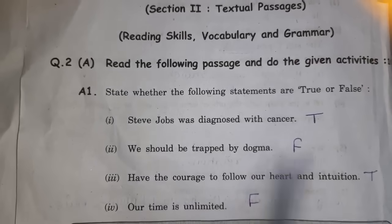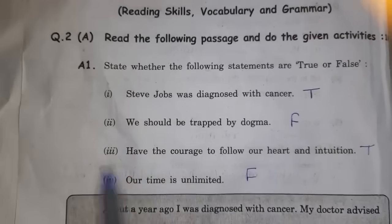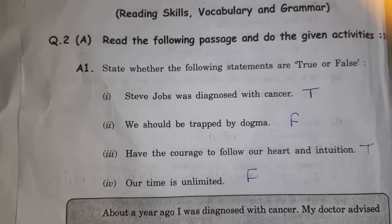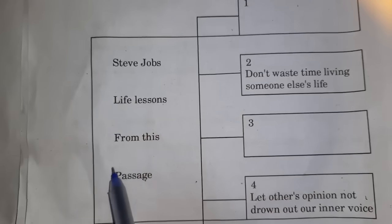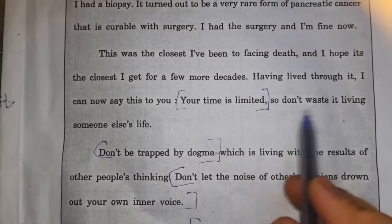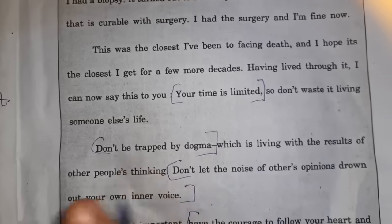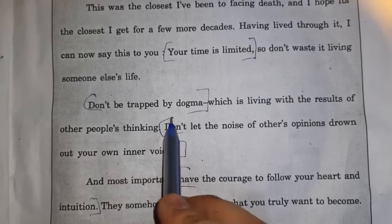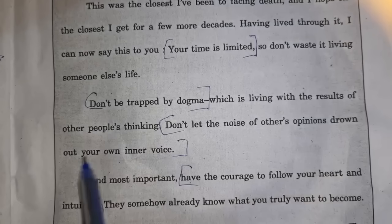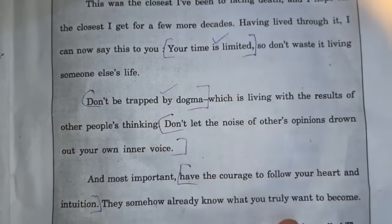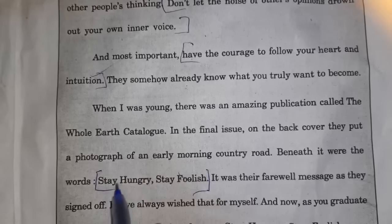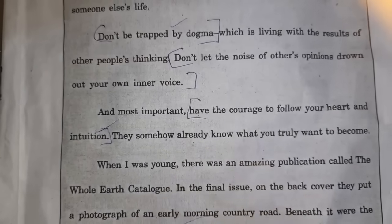These are all the grammar questions — 10 marks total. Now for true/false: 'We should be trapped by dogma' — False. 'We should not be trapped by dogma, have the courage to follow our heart and intuition' — True. 'Our time is unlimited' — False, because our time is limited. You had to fill 4 boxes; 2 were already filled. The remaining answers: 'Have the courage to follow your heart and intuition' — 3, and 'Stay hungry, stay foolish' — 4.